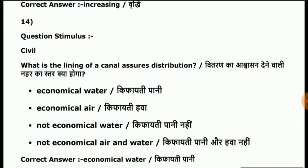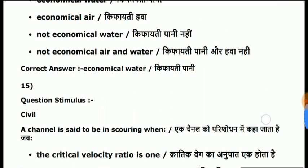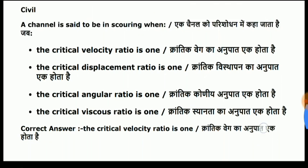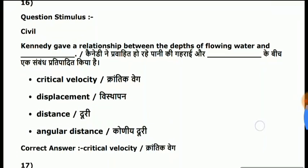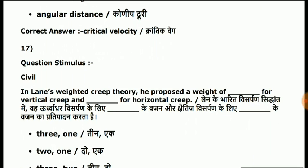What is the lining of a canal? The answer is economical water distribution. A channel is said to be in scoring when the critical velocity ratio is 1. Kennedy gave a relationship between the depths of flowing water and critical velocity. Answer is critical velocity.